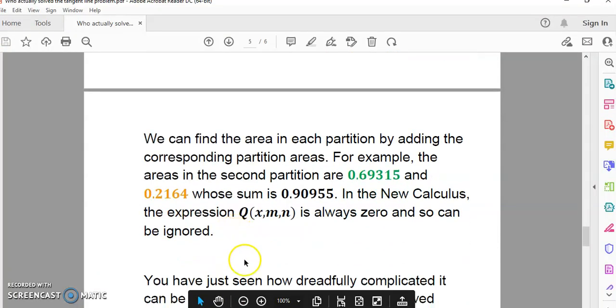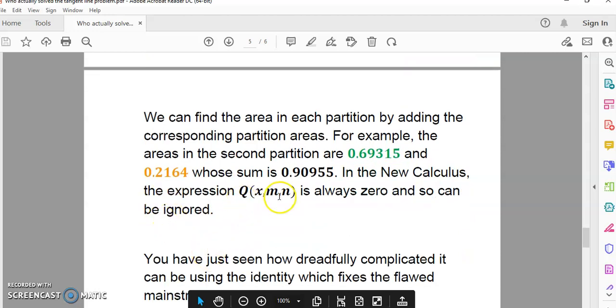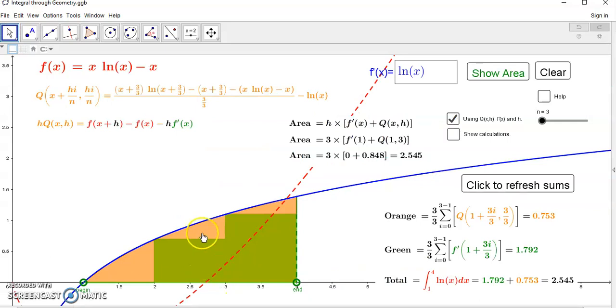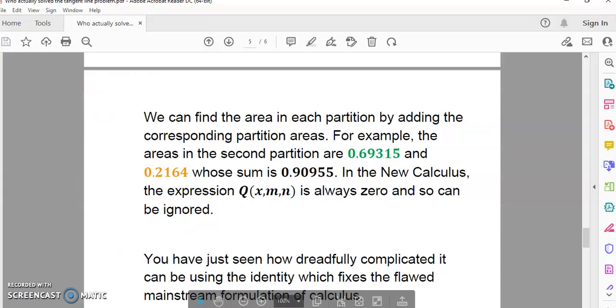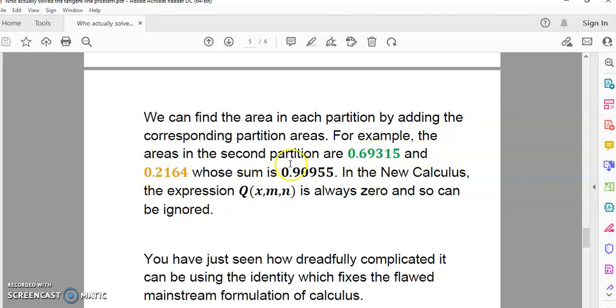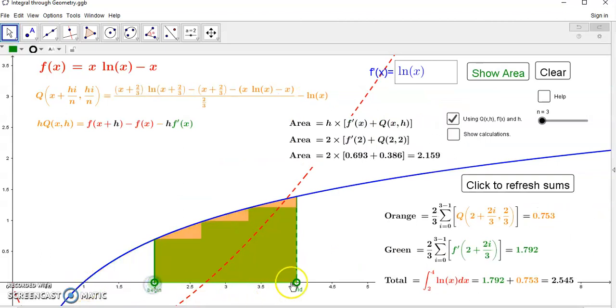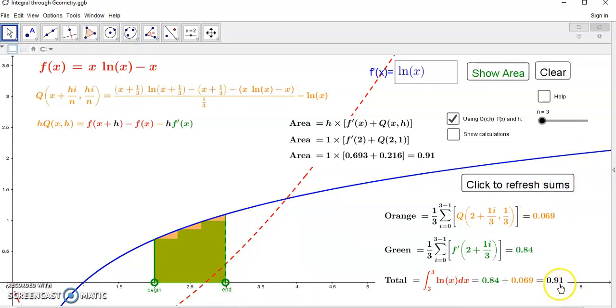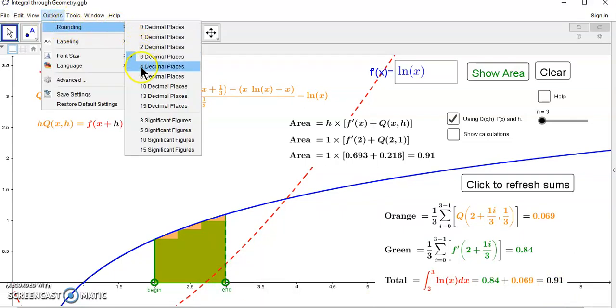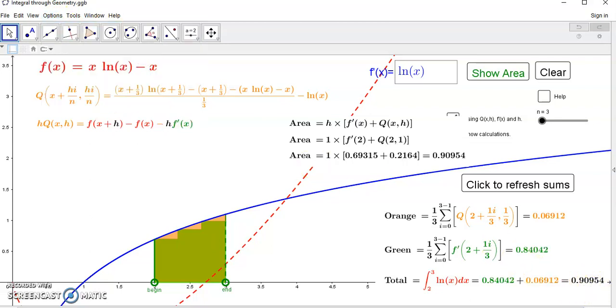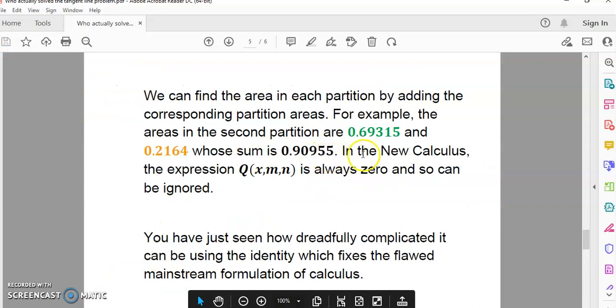Now, we can find the area in each partition by adding the corresponding partition areas. For example, if we wanted just this area in this partition here, between 2 and 3, then we'd simply add those corresponding areas. So, 0.6935 plus this gives us 0.90955. And we can verify that that's true by simply putting the begin there and that there, and refreshing the sums, and there we go, 0.91. That's pretty close. In fact, I could expand this by saying 5 decimal places, 0.90954, 90955. Pretty close.